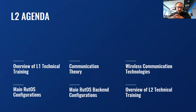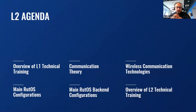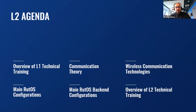After the overview of Level 1 technical training, which will begin the Level 2 training agenda, you will hear where my colleagues covered topics such as network fundamentals, use cases and usage scenarios, product codes and versions, and RUTOS services. The agenda will also cover communication theory, RUTOS configuration examples and the backend of them. You will also be introduced to wireless communication technologies. The most important part of the agenda is main RUTOS configurations and main RUTOS back-end configurations.